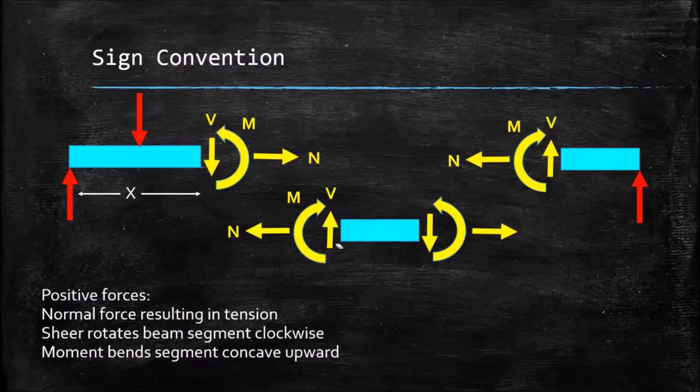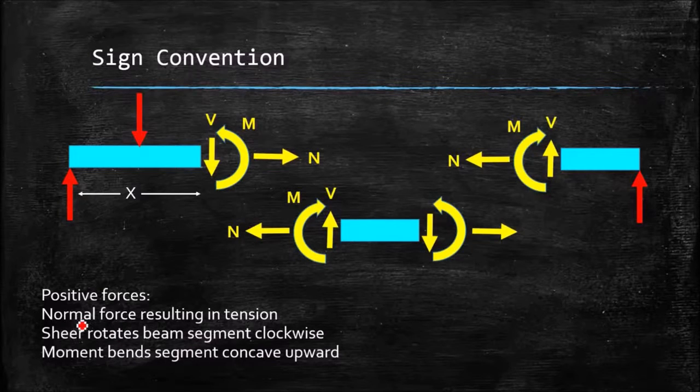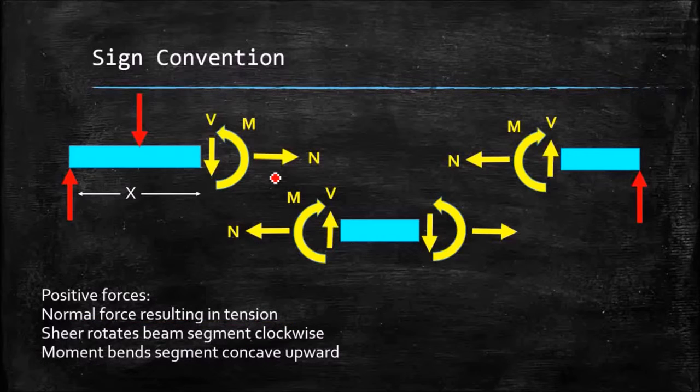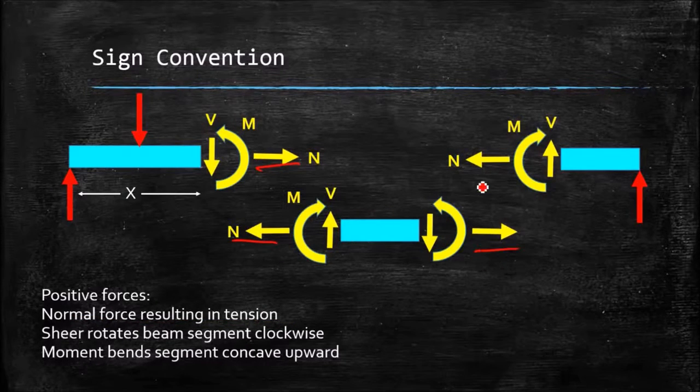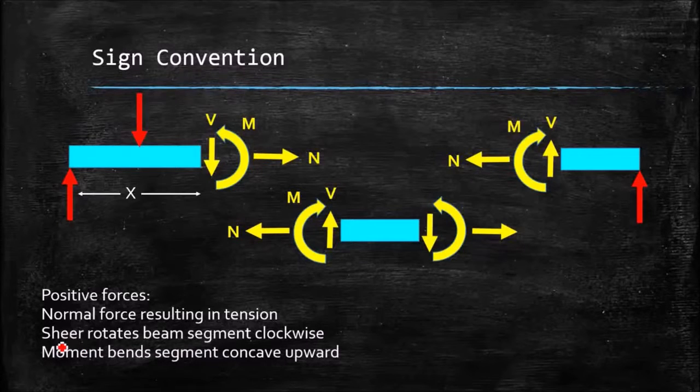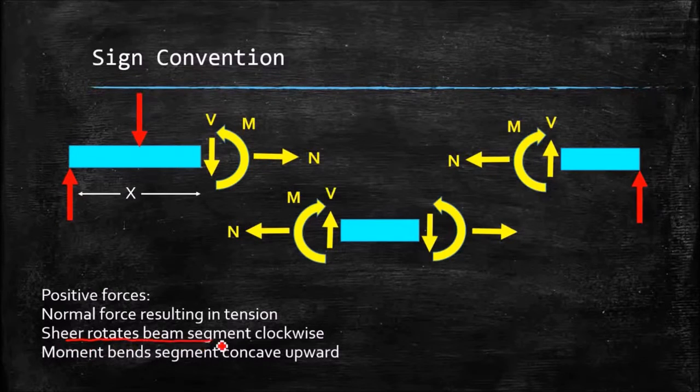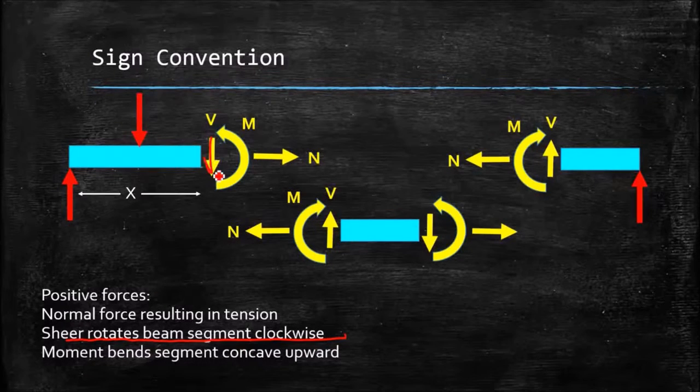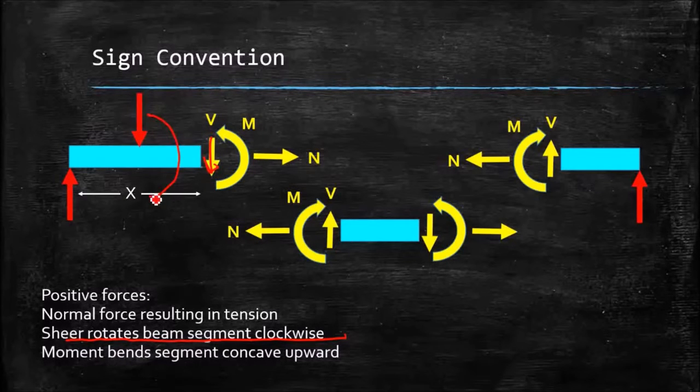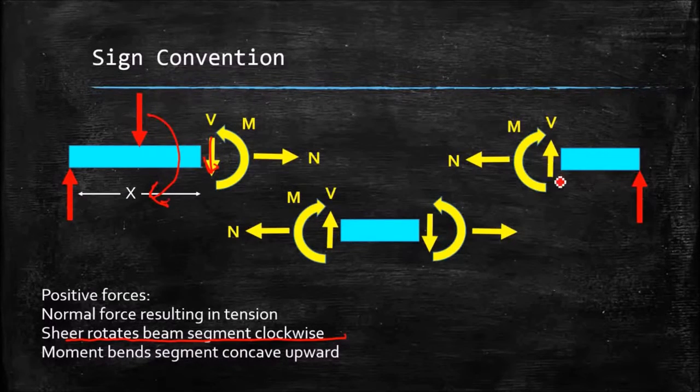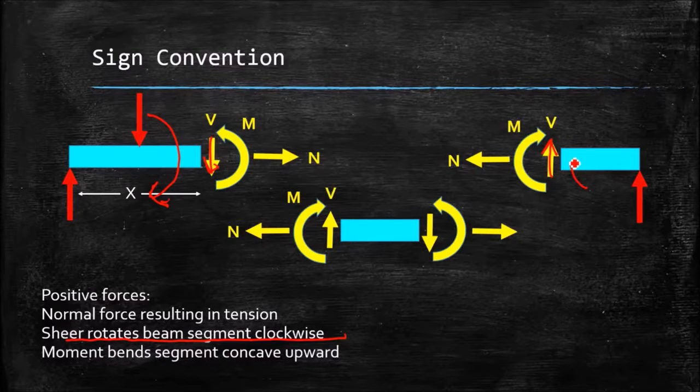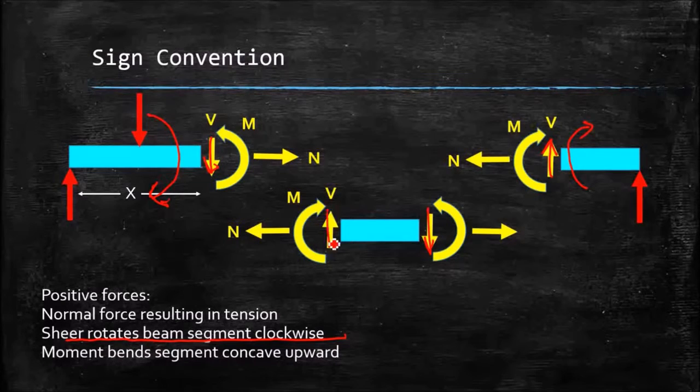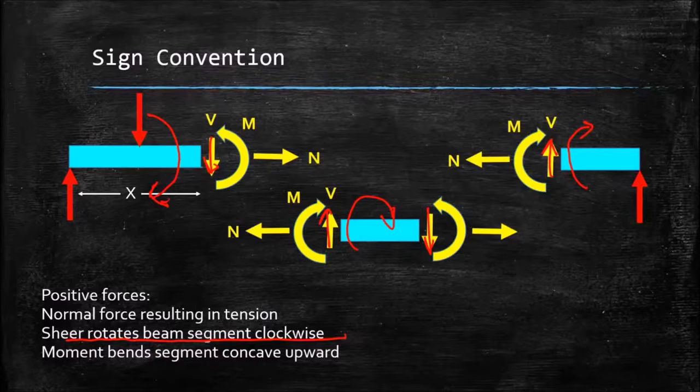But as they're drawn, as I mentioned, these are all positive forces, so our convention says that any normal force resulting in tension is a positive force, so all these are positive normal forces. We say that a shear force that rotates the beam segment clockwise is positive. So in this case, I have a force that would cause this segment to rotate clockwise, that's positive.